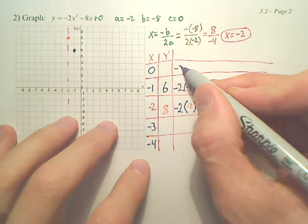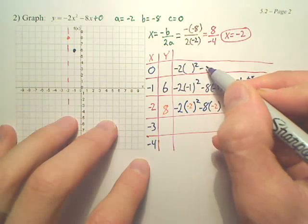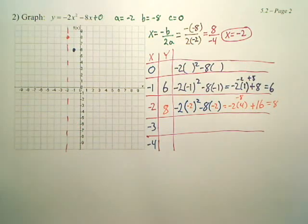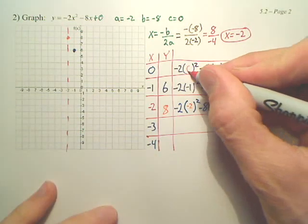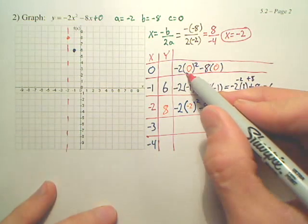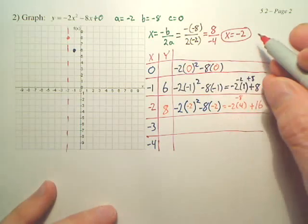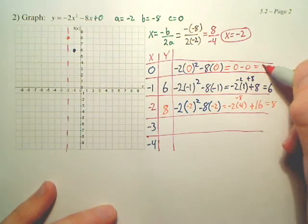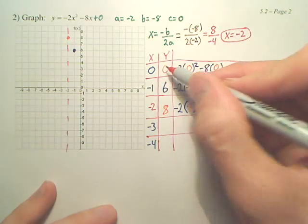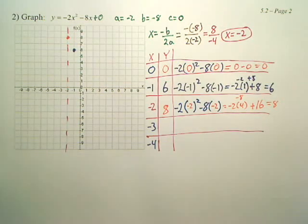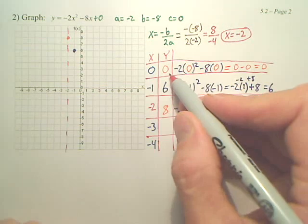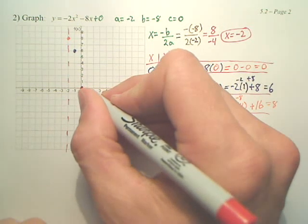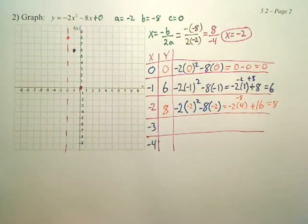So negative 2 times x squared minus 8 times x. I always love plugging in 0. 0 is the easiest number to plug in. Doesn't that mean 0 equals 0 minus 0? I always love 0. It's just so easy to plug in. So 0, 0, right there. Over 0, up 0.